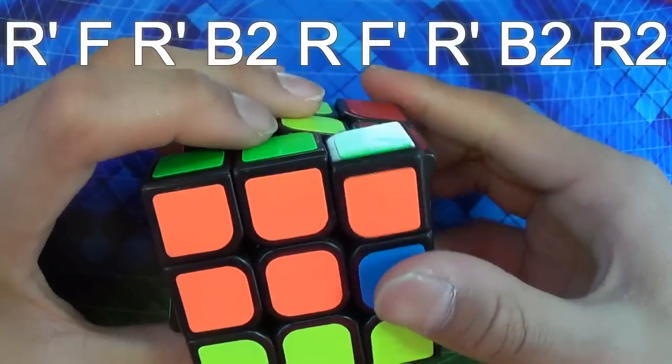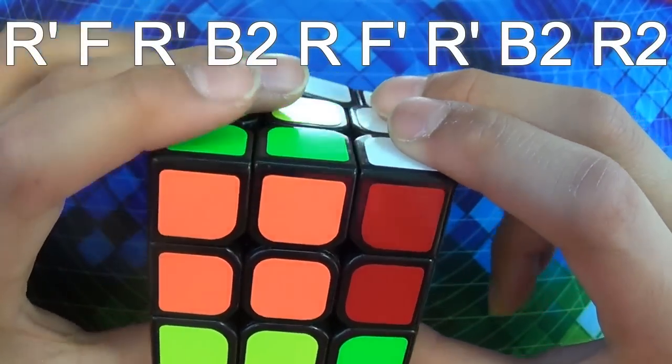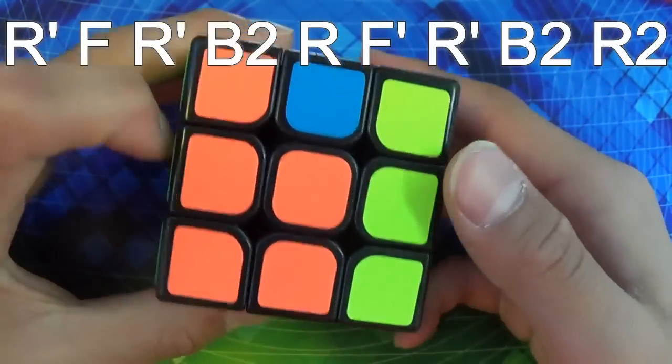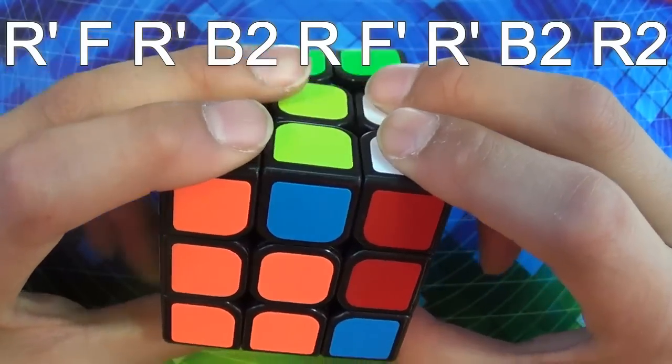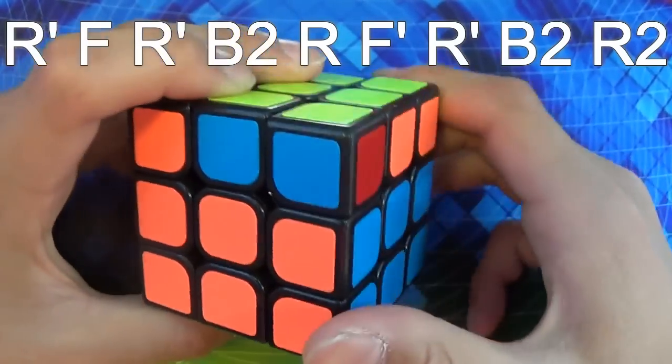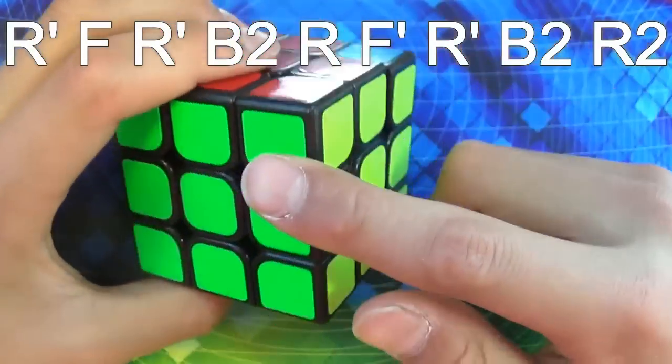R inverted, F, R inverted, B2, R, F inverted, R inverted, B2, and R2. So, and then you'll get headlights.